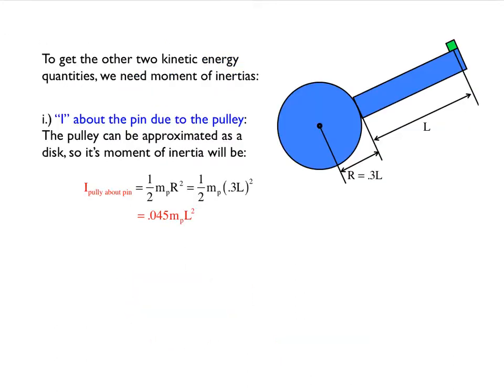To get the kinetic energy of the pulley, you need to know what the moment of inertia about the pin is for the pulley. If we assume that the pulley is acting like a disc, that'll be a half m r squared. Putting in 0.3L for r, we're going to end up with this.